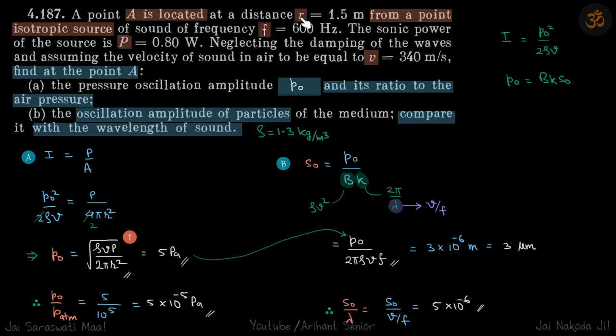We have a source from which at a distance r is point A. At that point r we need to find the pressure amplitude and its ratio to the atmospheric pressure. In the second part, we need to find the oscillation amplitude and then compare it with the wavelength of the sound. The distance r from the source is given, along with the source frequency, power, and velocity of sound.